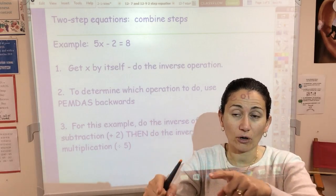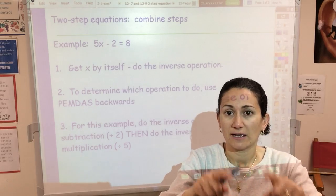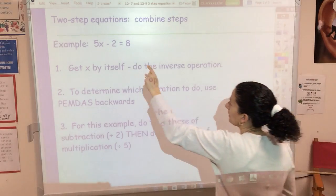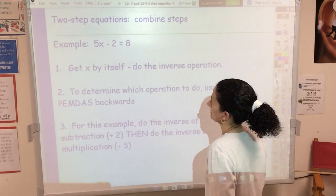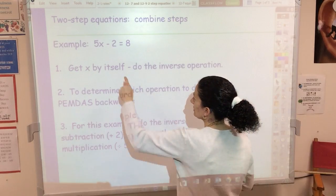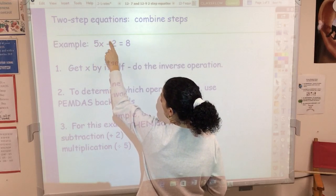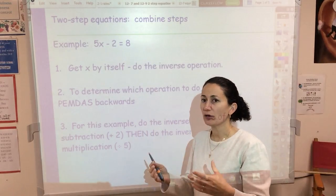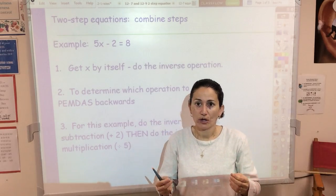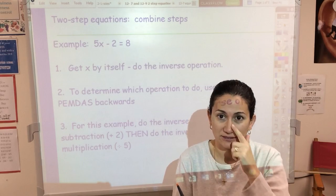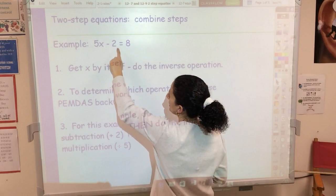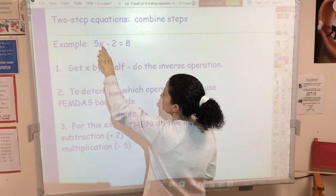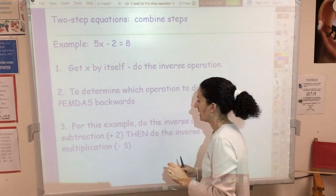You do any addition and subtraction before multiplication and division. In this example we've got multiplication and subtraction. To solve this we're going to get X alone — move the 5 and the negative 2. We would use PEMDAS backwards; if we don't solve it this way we won't get the right answer — it's like breaking the rules of order of operations.